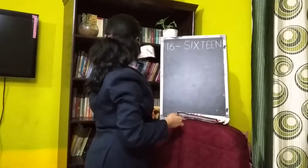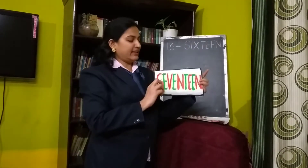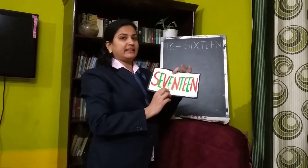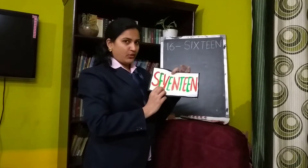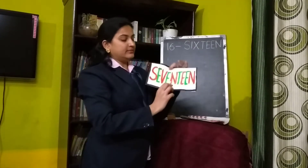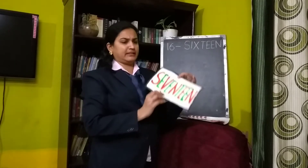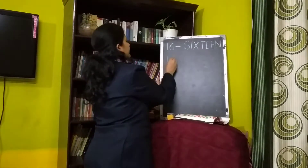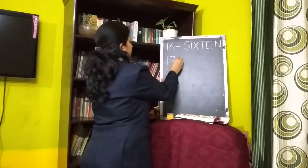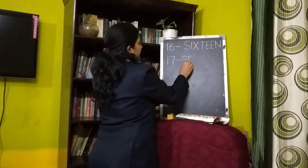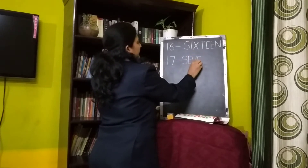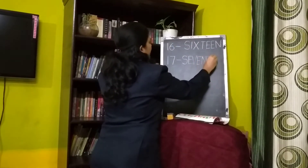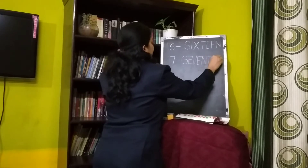Next number is 17. Like 16, seventeen has seven — S-E-V-E-N, 7 — then teen — T-E-E-N. So S-E-V-E-N-T-E-E-N. Very easy! 1, 7 — seventeen, 17.